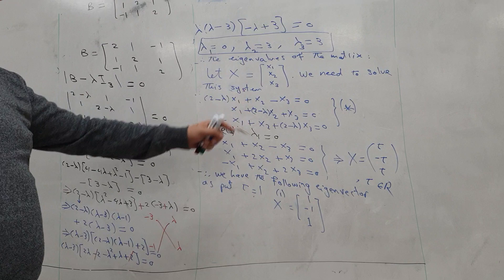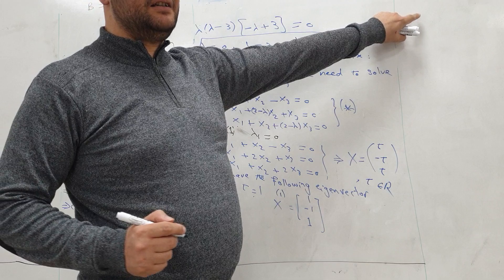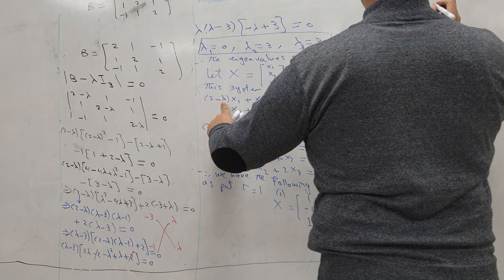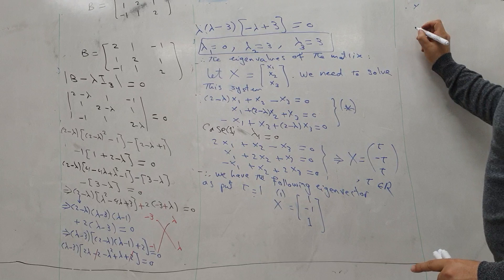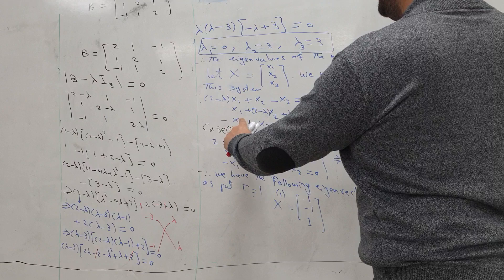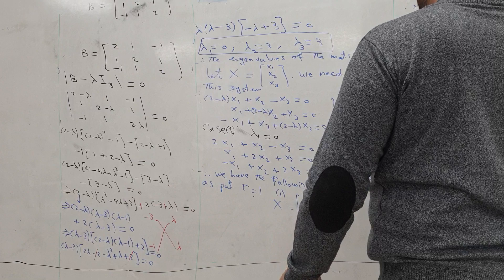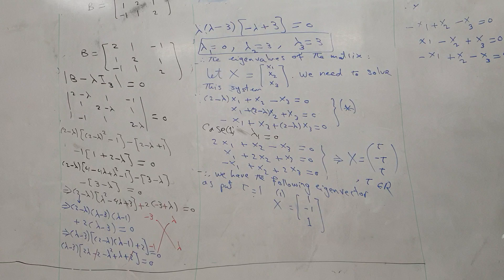To find the other eigenvectors we substitute lambda equal 3 into the system. With 2 minus 3 equal minus 1, the system becomes: minus x1 + x2 minus x3 = 0; x1 minus x2 + x3 = 0; minus x1 + x2 minus x3 = 0. We observe that the first equation is the same as the third equation.